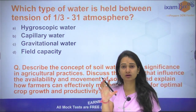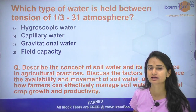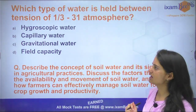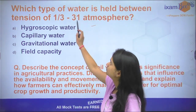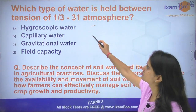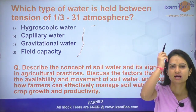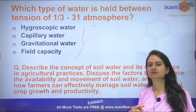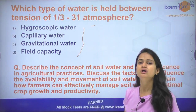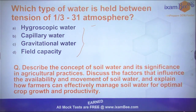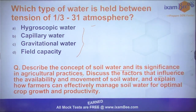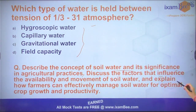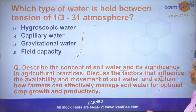Now that is it about the soil water relationship. There is a question for you to answer in the comments section: which type of water is held between the tension of 1/3 to minus 31 atmosphere? Also, for descriptive practice, describe the concept of soil water and its significance in agricultural practices. Discuss the factors that influence the availability and movement of soil water and explain how farmers can effectively manage soil water for optimal crop growth and productivity.